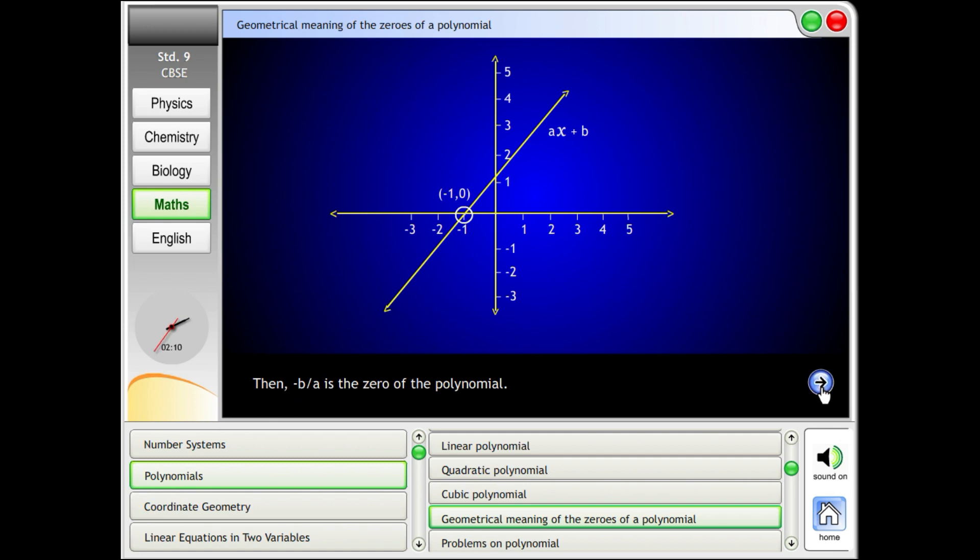Then -b/a is the zero of the polynomial. In the given figure, the line is meeting at x = -1. Therefore, the zero of ax + b is -1.